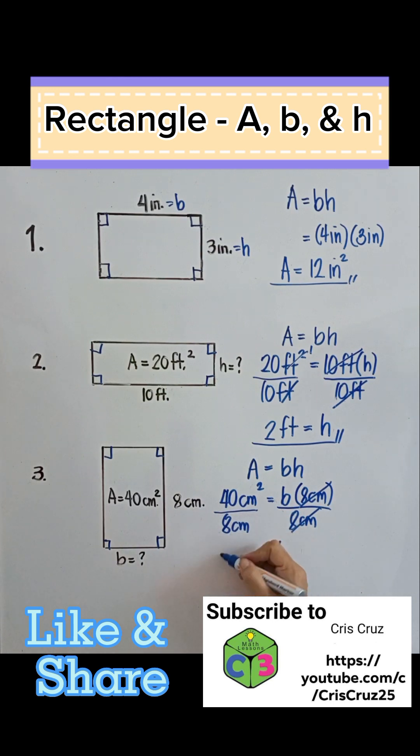40 divided by 8 is 5. Centimeters squared divided by cm gives us 1 cm. So the base is equal to 5 centimeters.